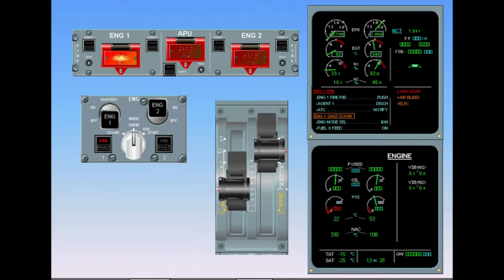Once the engine is shut down, you can fight the fire. First, you must lift the guard on the Engine 1 Fire push-button. This item is not shown on the ECAM procedure. Lift the Engine 1 Fire push-button guard. Now, push the Engine 1 Fire push-button switch.